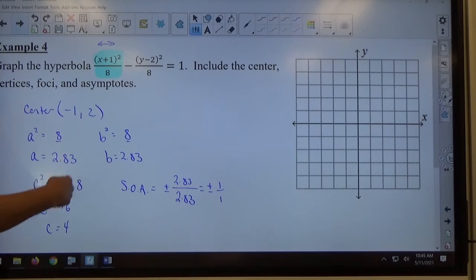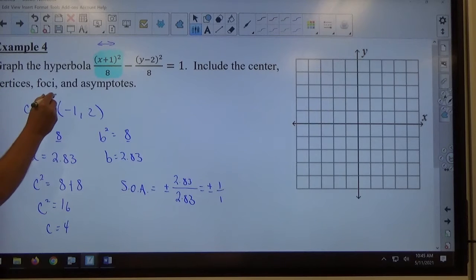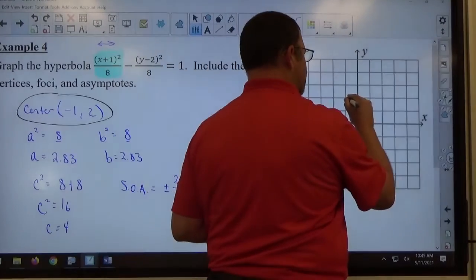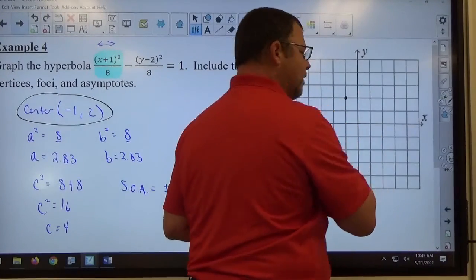So that's everything I need to get from the standard form. I need my center, I need what a, b, and c are, and I need the slope of asymptotes. Once I have all that information, first thing is my center. I'm going to plot negative 1, 2.